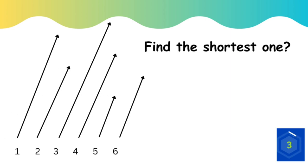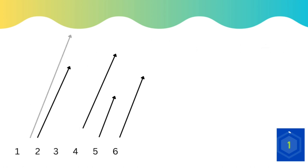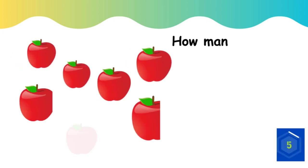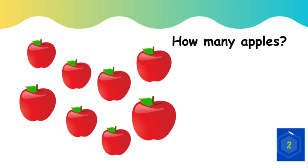Find the shortest one. How many apples can you see in this picture? Eight apples.